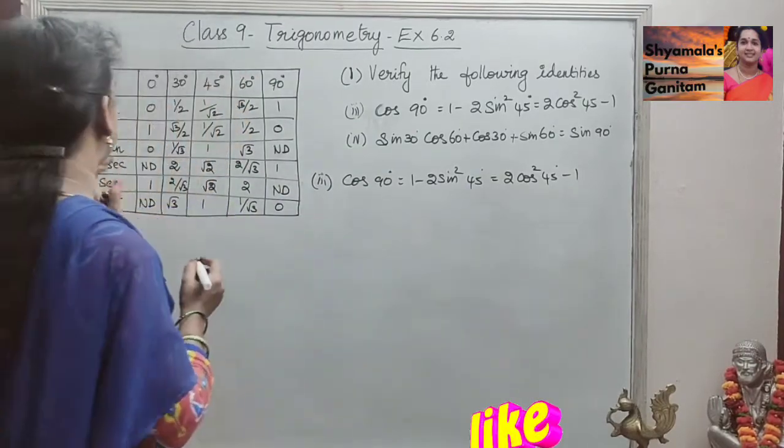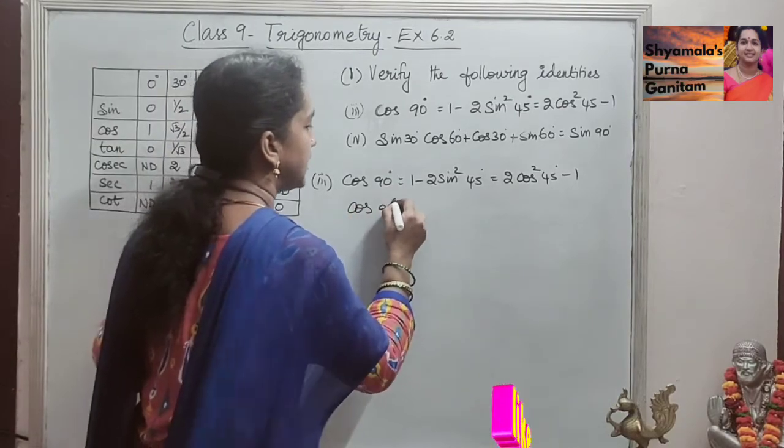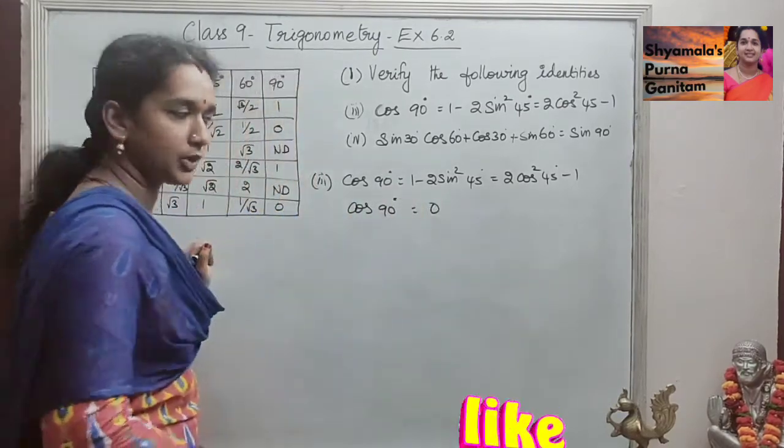So, cos 90°, the value is 0 here, so cos 90° is equal to 0.